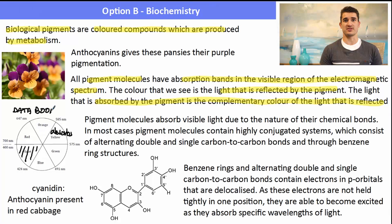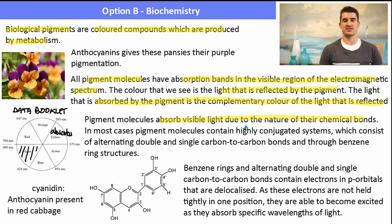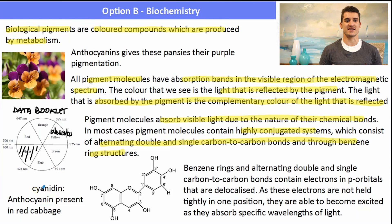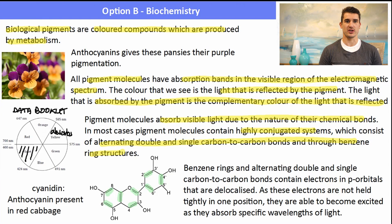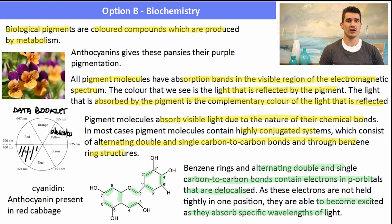Make sure to check the color wheel in the data book, especially when a question gives you colors. Pigments absorb light due to the nature of their chemical bonds — most pigments contain a conjugated system, consisting of alternating double and single carbon-to-carbon bonds. For example, cyanidine, an anthocyanin present in red cabbage, has multiple benzene rings and alternating C–C single and double bonds, making it a highly conjugated system with delocalized p-orbital electrons.